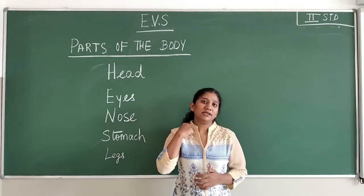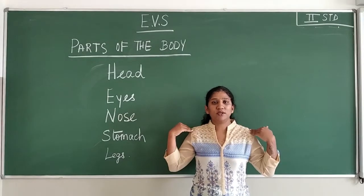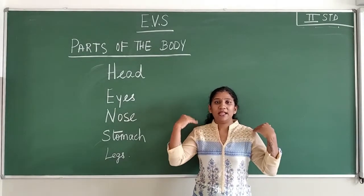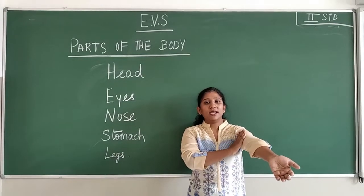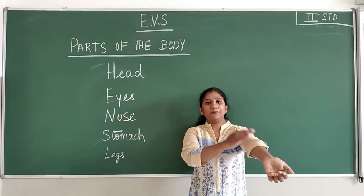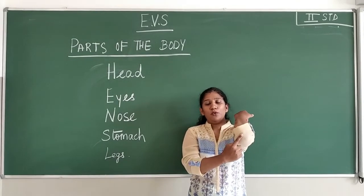And this part is neck. This is neck and this portion is called as shoulders and these are our hands. And this part is called as arms, and in the hands this part is called as arms and this is called as elbow. Understood?